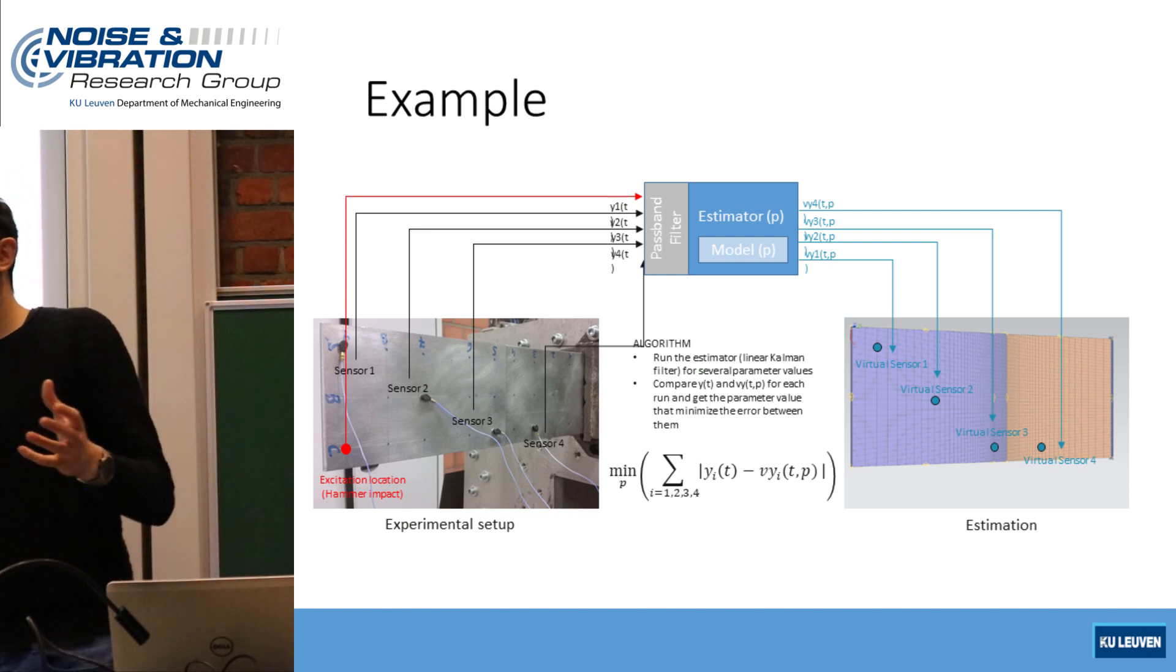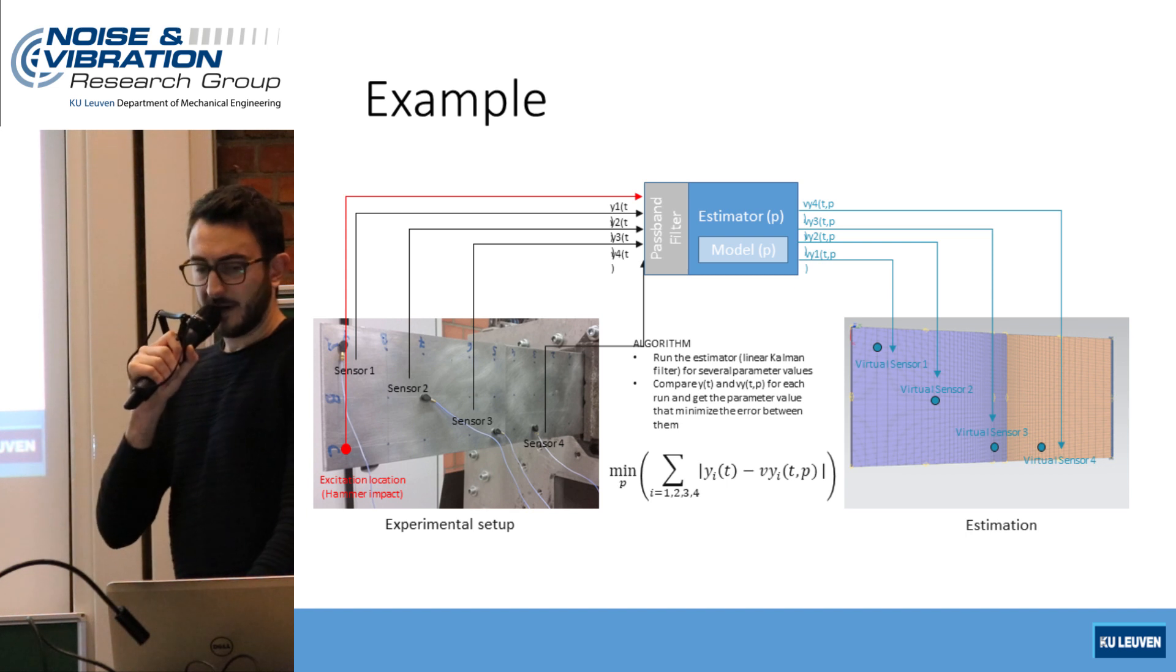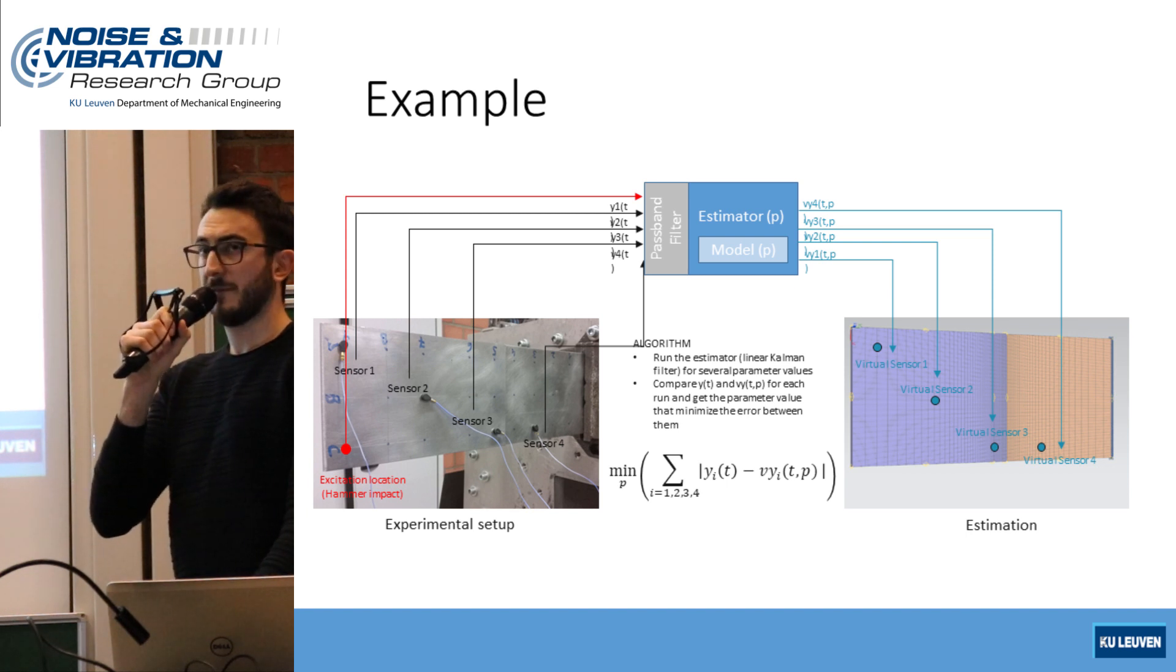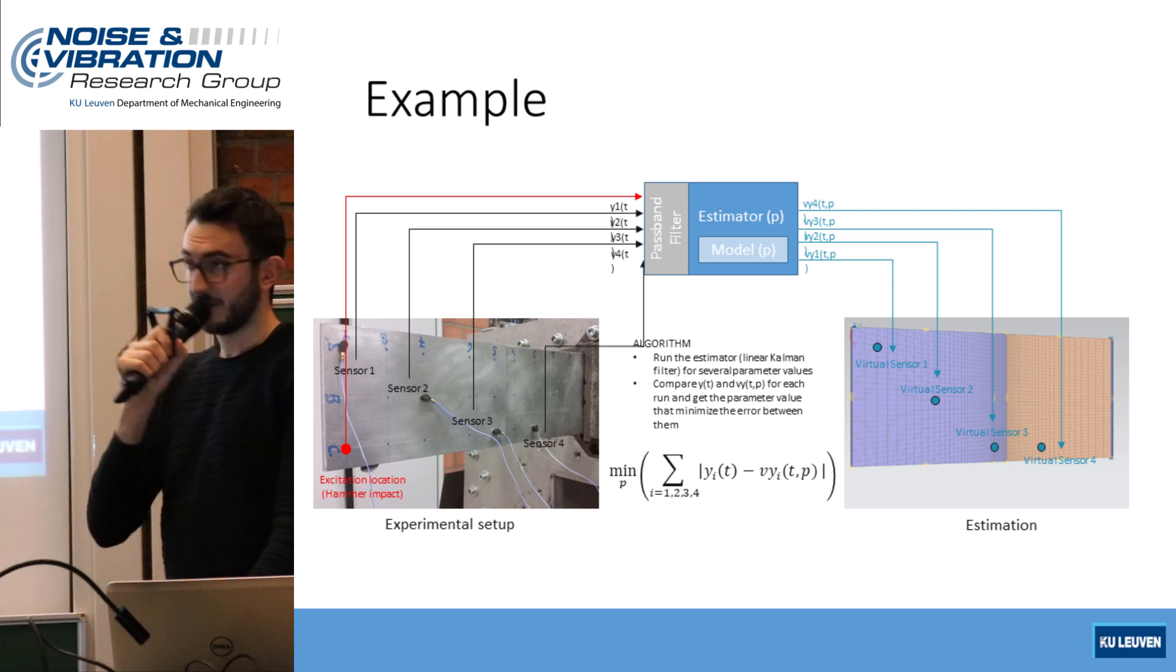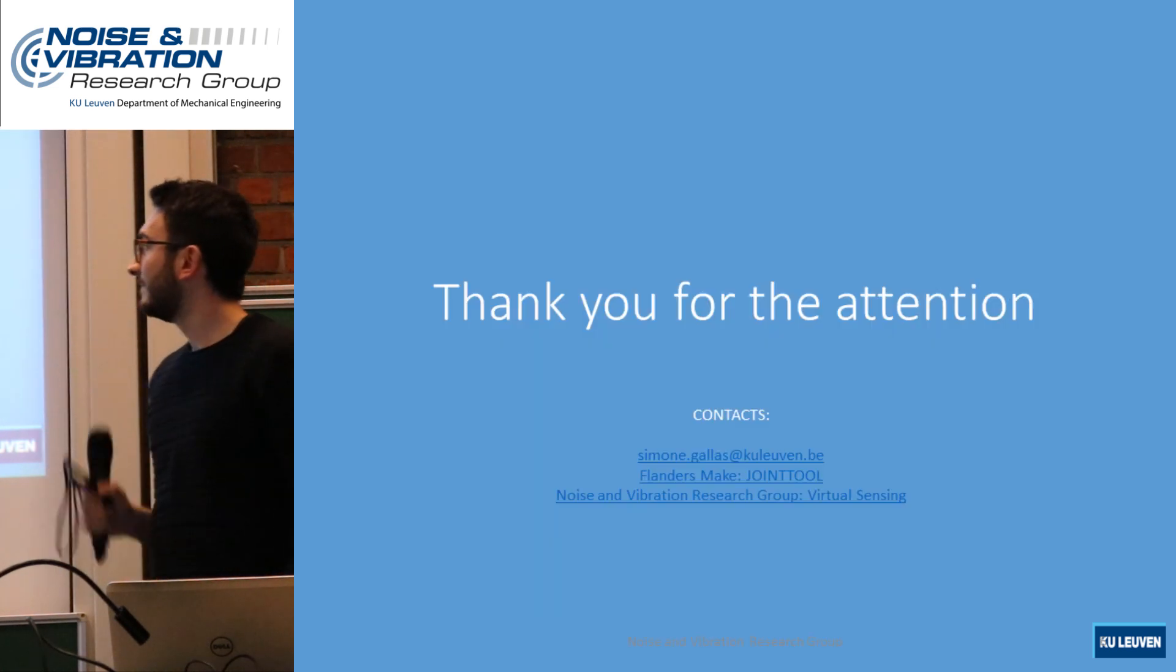The parameter estimation is made possible by minimizing the error between the virtual sensor and the real ones. This is only one of the different potential applications of virtual sensing techniques for parameter estimation, and in the upcoming months I will be investigating further these powerful methodologies. Thank you for the attention.